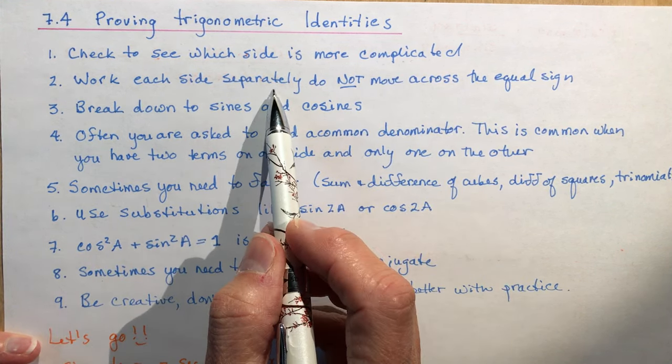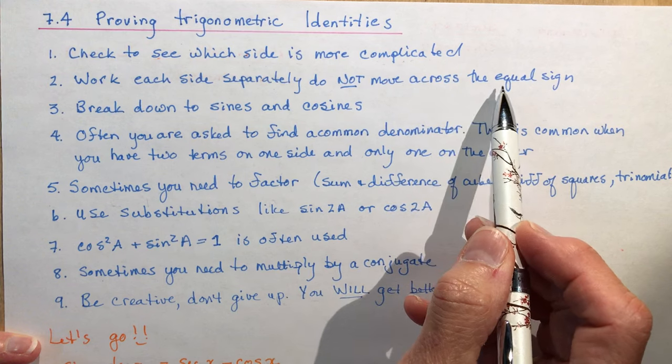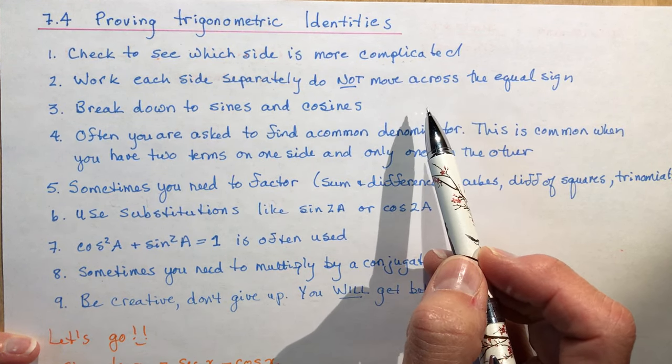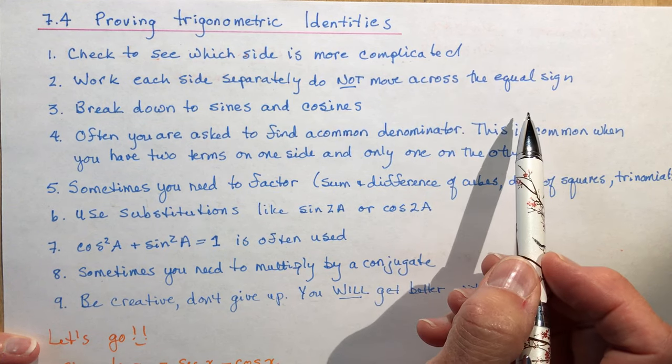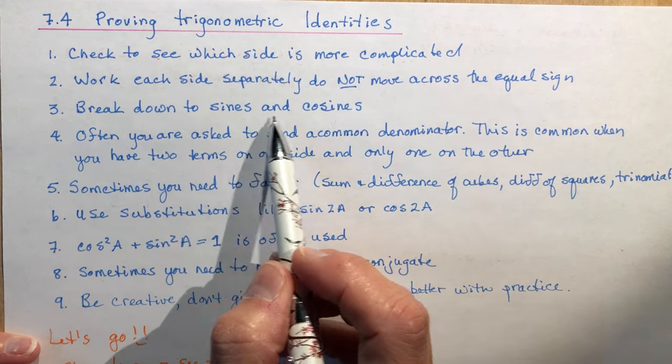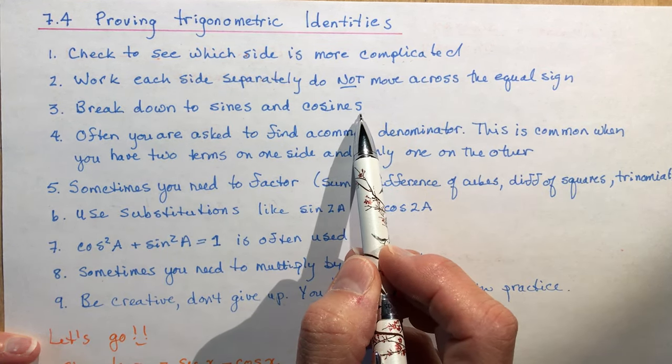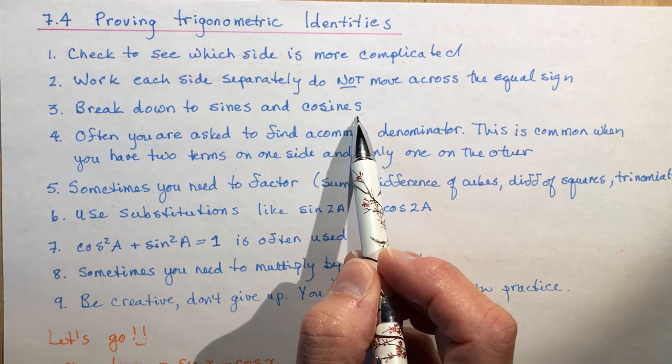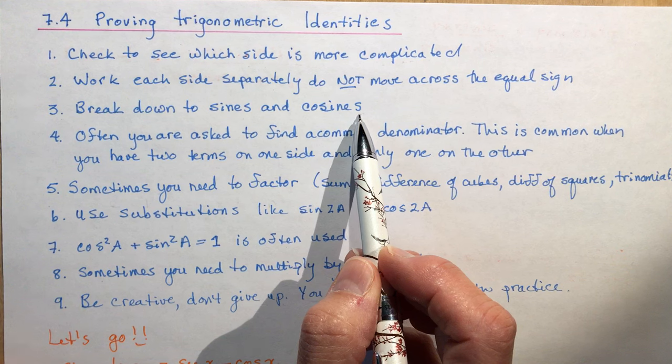Work each side separately. Do not move across the equal sign. In other words, you're going to say left side is equal to this and work with that until you get an answer, and right side. Break down into sines and cosines. This is a really key point. If you can break it into these little building blocks, you're more likely to see some sort of similarity.